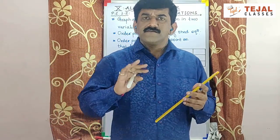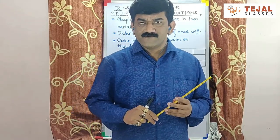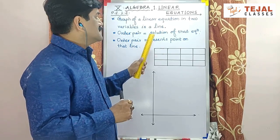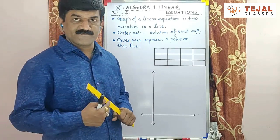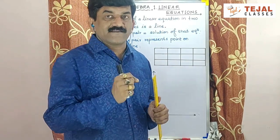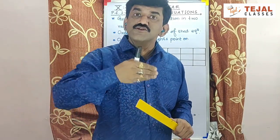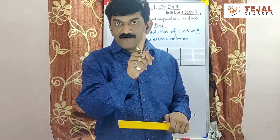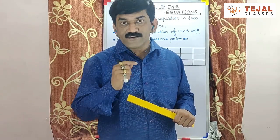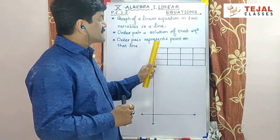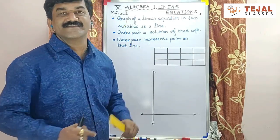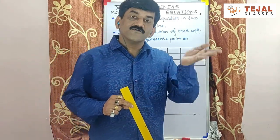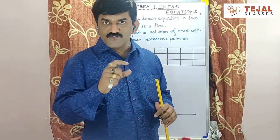Minimum 3 points are required, though you can plot more than 3 points. Solution of that equation is known as an order pair. For example, अगर x plus y equal to 5 है, तो इसके बहुत सारे solutions आएंगे. 0 plus 5 = 5, so (0,5) is an order pair. 1 plus 4 = 5, so (1,4) is an order pair. Order pair represents a point on that line — line को order pair represent करती है, या order pair उस line पर lie करती है.